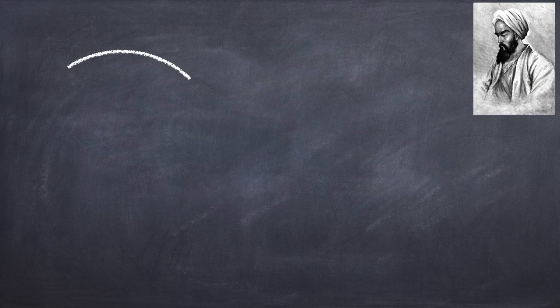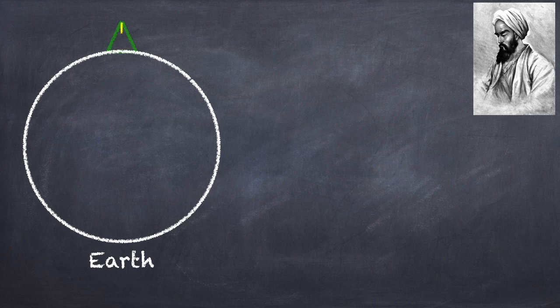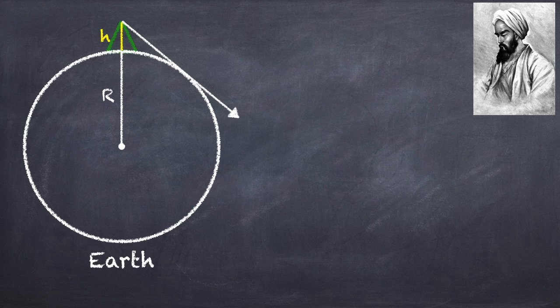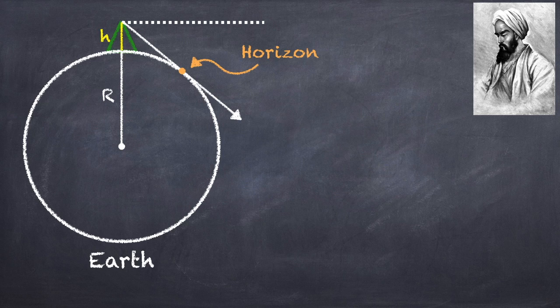Now that I know the height of my mountain, Albiruni says if this is the earth with the mountain on top of it and the earth has a radius r, if I climb to the top of the mountain and look at the horizon, then my line of sight will be tangent to the earth at that point. And I can measure this angle below the horizontal, which I'm going to call theta.